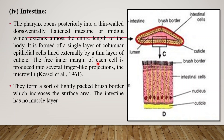The free inner margin of each cell is produced into several finger-like projections called microvilli, forming a brush border, which was discovered by Kessel et al., 1961. They form a tightly packed brush border which increases the surface area for absorption. The intestine has no muscle layer.